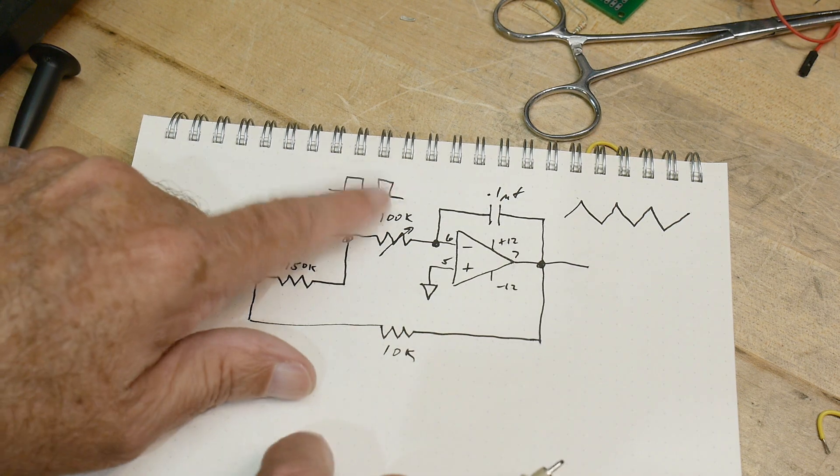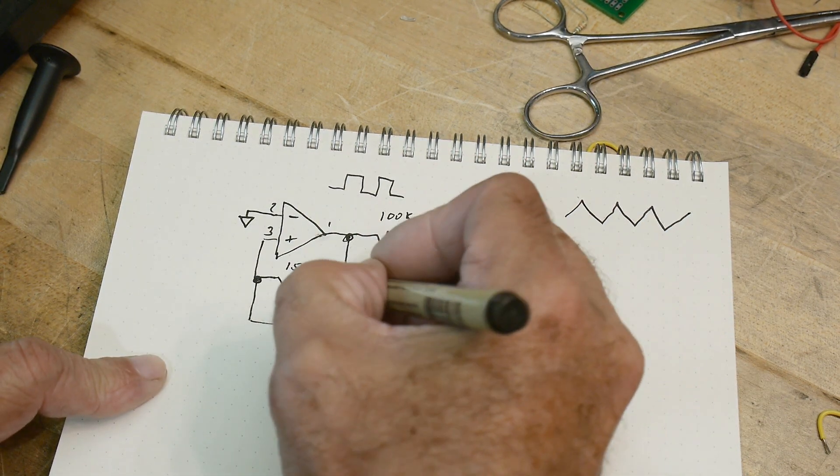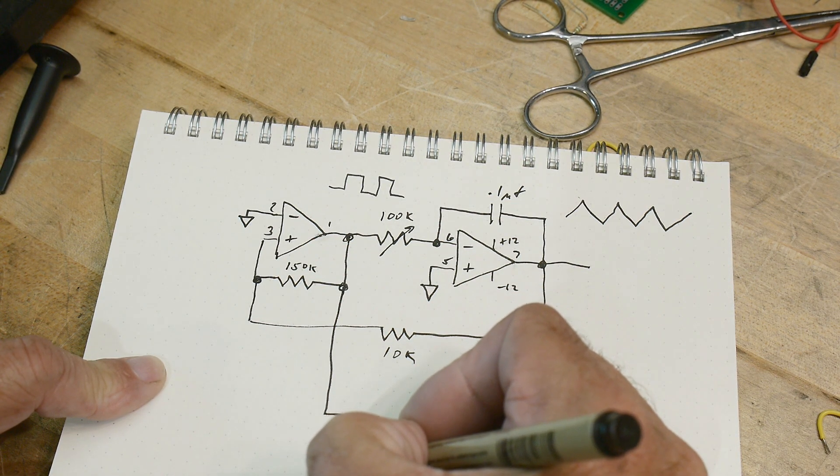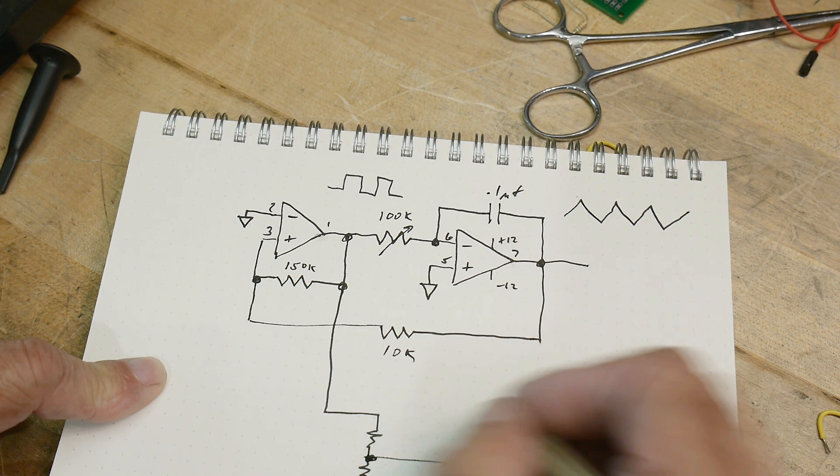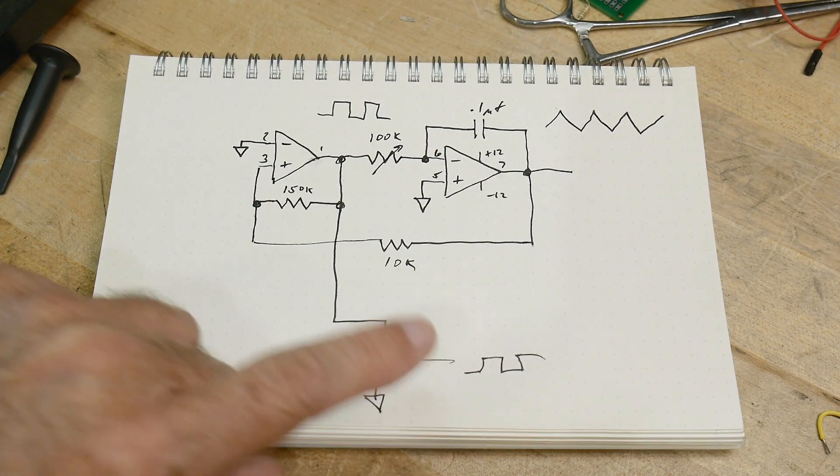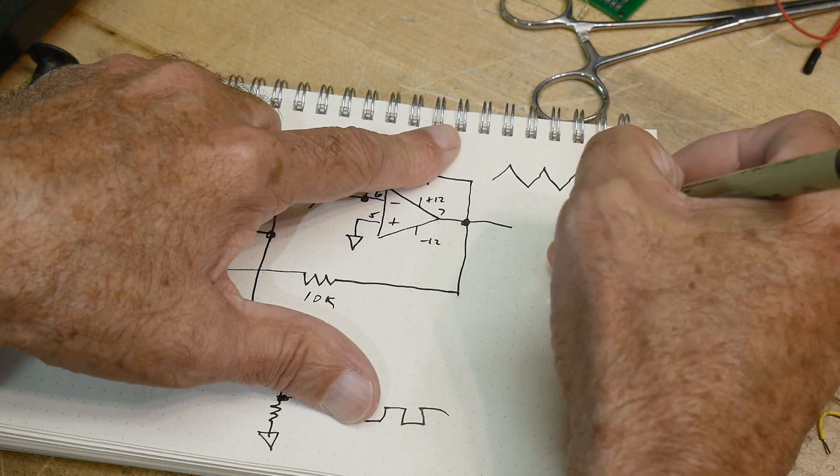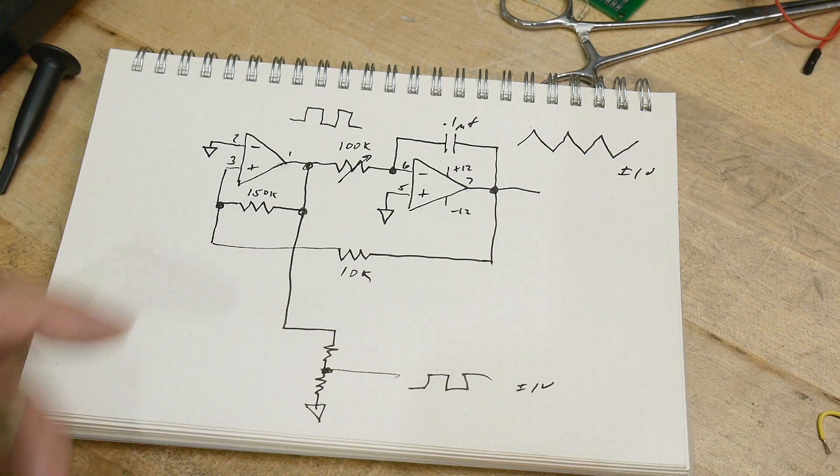So we're going to have to take this output—let's say its output comes down over here. We're going to have to put a resistive divider on it such that we get a square wave here that's basically one volt. If this is plus or minus one volt, we want this to be about plus or minus one volt.